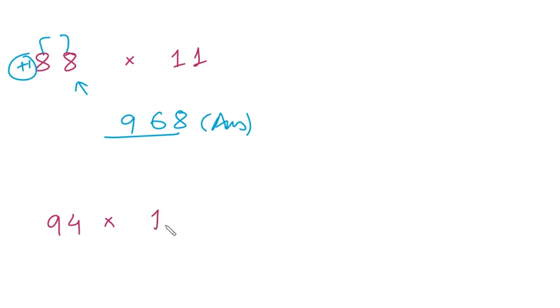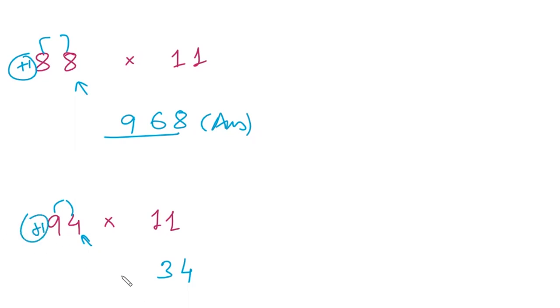Let's take one more: 94 multiplied by 11. We write 4, then 9 plus 4 gives us 13. We write 3 and carry the 1, so 9 plus 1 is 10. Our answer is 1034.